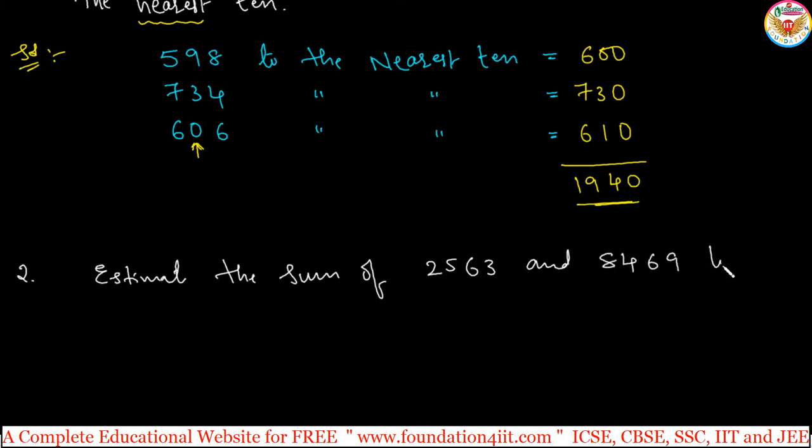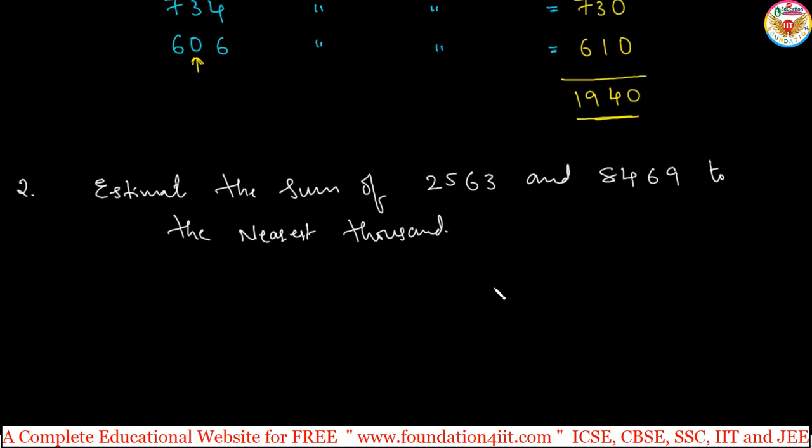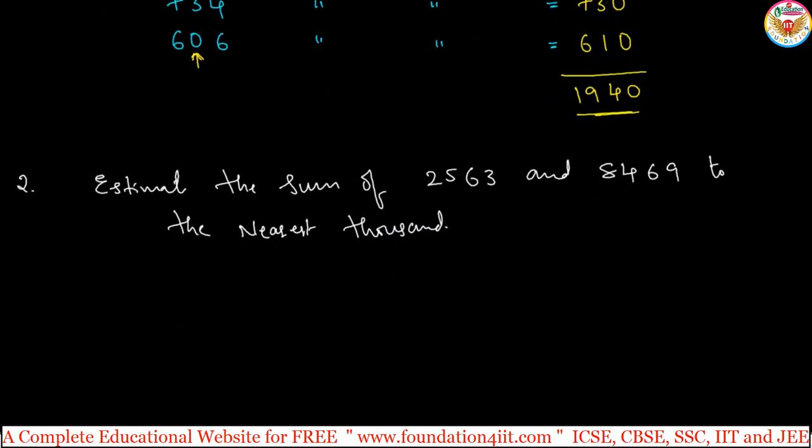This is to the nearest, previous one is nearest to 10, this is nearest to 1000. If you know, already how to rounding off the nearest, rounding off the 1000, any number rounding off to 1000.